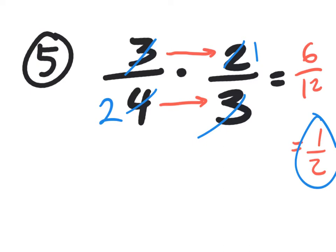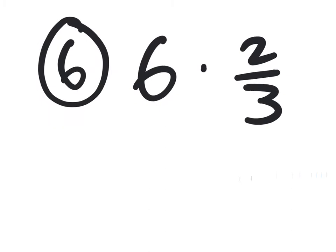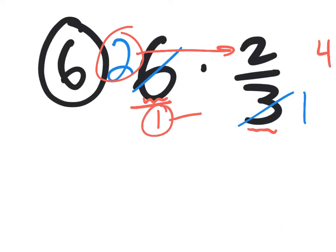You're also going to need to know how to multiply a regular number by a fraction. Simply put that 6 over 1, then multiply top with top and bottom with bottom — or cancel. The 6 on top and the 3 on the bottom both divide by 3: 6 divided by 3 is 2, 3 divided by 3 is 1. Then multiply 2 times 2 to get 4, and 1 times 1 to get 1. So the final answer is just 4.